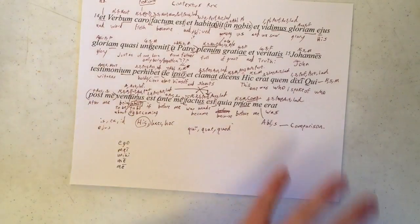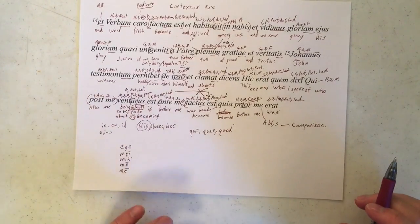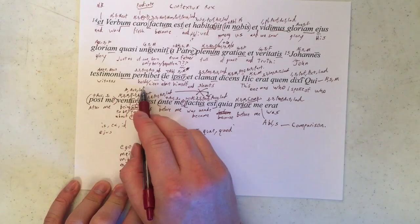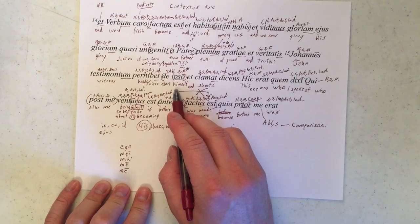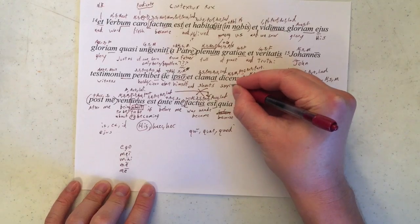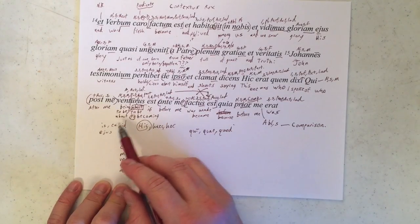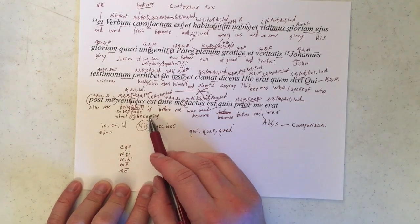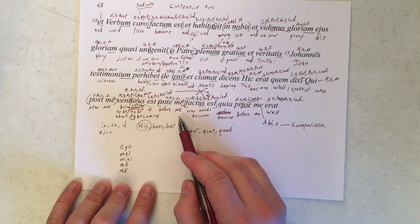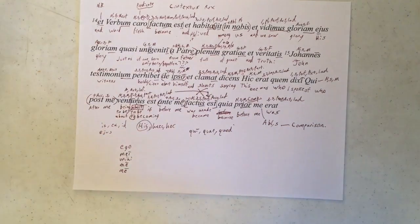So, there is all of our text. We can go ahead and read all of it aloud. This part right here. I'm going to slim that down. I wouldn't actually read it though. John holds a witness about himself and shouts, saying, This one was who I spoke of. Who is about to come after me. What he became before me. Because he was before me. So there is our translation of the Latin text.